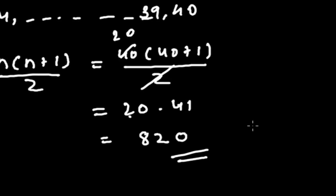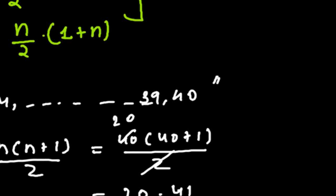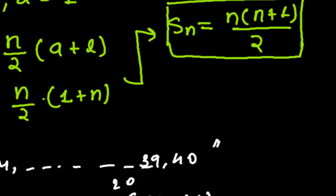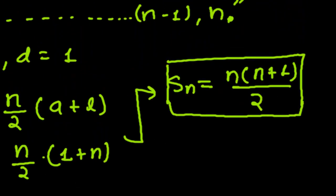So this is the simplest formula — it makes finding the sum of the first n natural numbers or positive integers very easy. Remember this formula, it's very important. We'll be meeting in the next video with lots of problems. Bye bye!